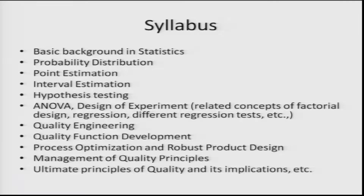We will consider quality engineering, which will be more qualitative in nature compared to the quantitative design of experiments section. We will cover quality functional deployment — how functions can be developed depending on inputs and outputs to manage quality on a robust scale. Then process optimization, its effect on total quality management, how quality can be improved, and finally robust product design and management of quality principles.